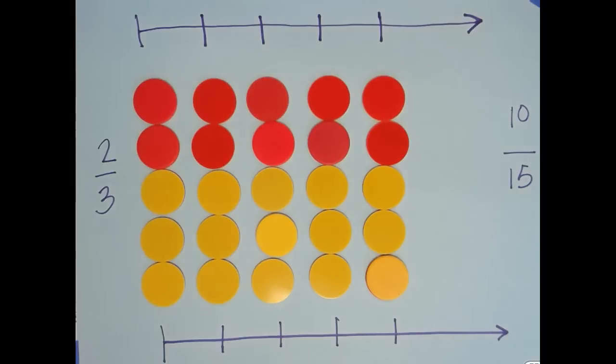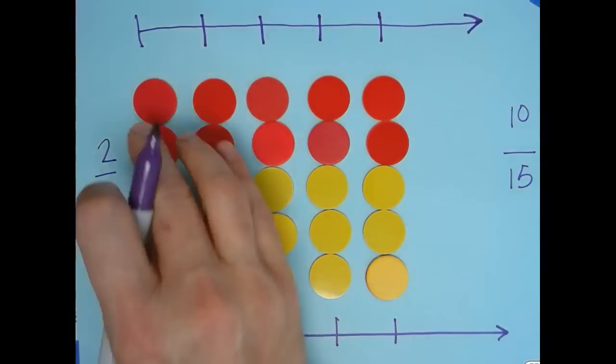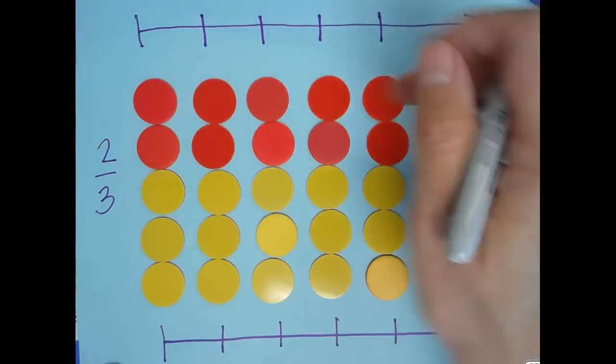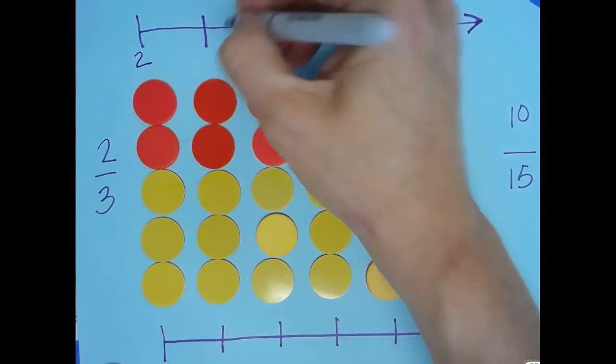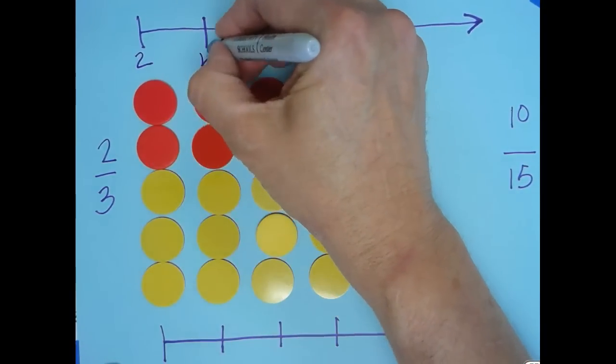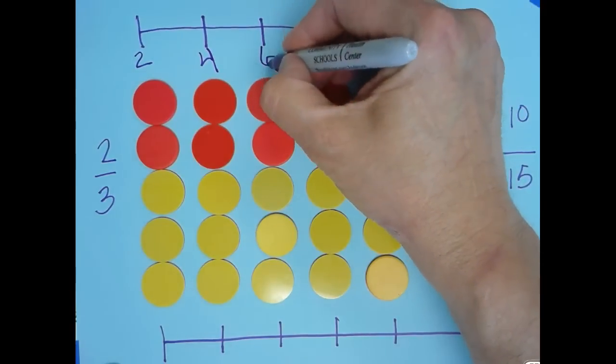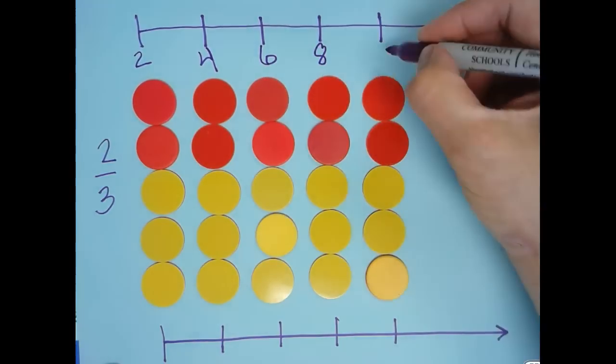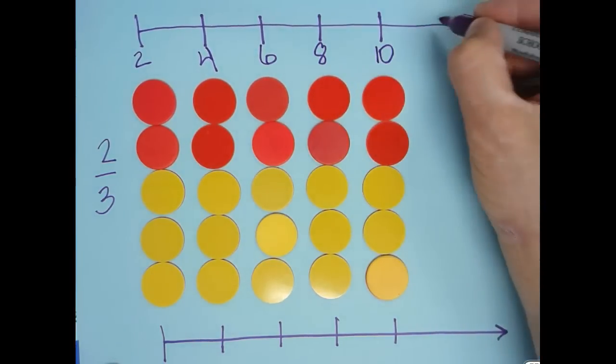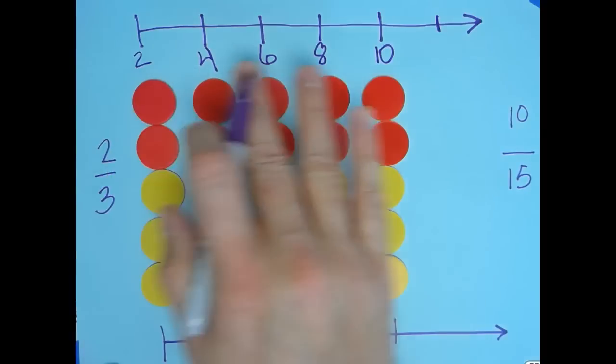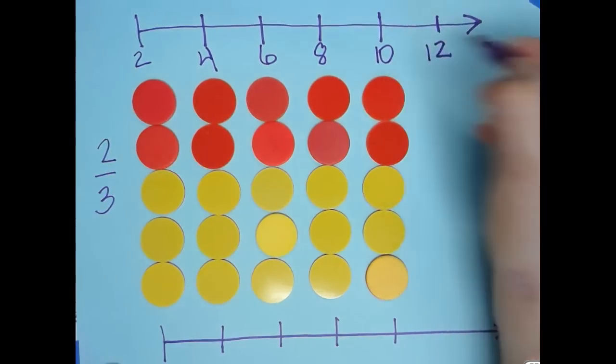As we look at this on a number line, we just look at each group, the twos, the red. The first one is two, then we have a total of four when we get into the second group, six, eight, ten. If we look at the pattern we're following, we're counting by twos, so that becomes twelve.